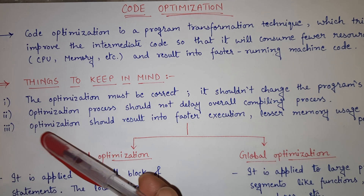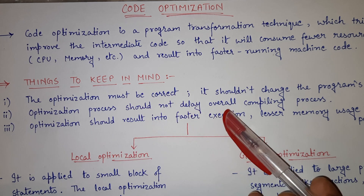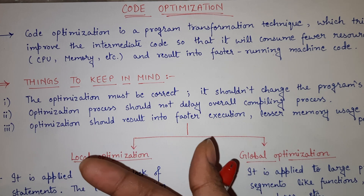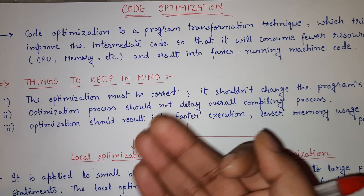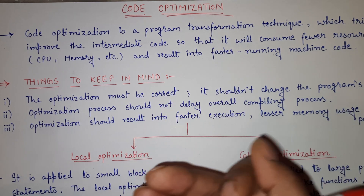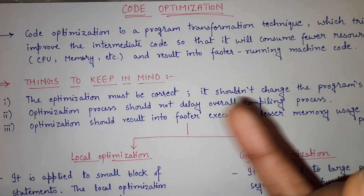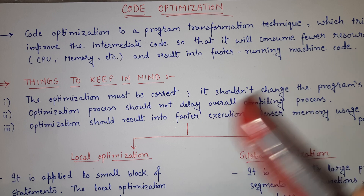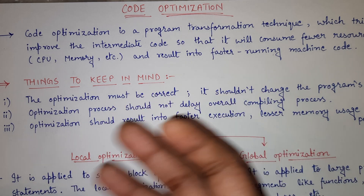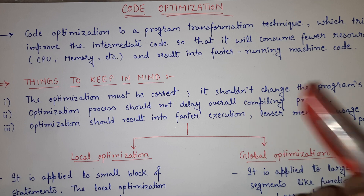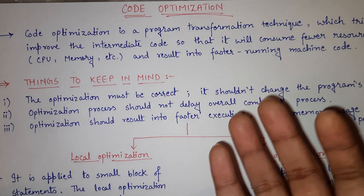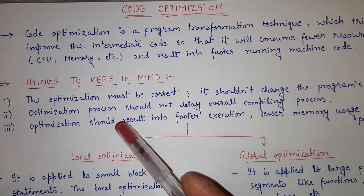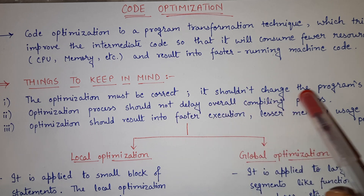The second point is: the optimization process should not delay the overall compiling process. It should not happen that the optimization technique is so complicated that it complicates your compiling process. If your optimization process is delaying the overall compiling process, that means instead of optimizing your code, you are actually complicating it.